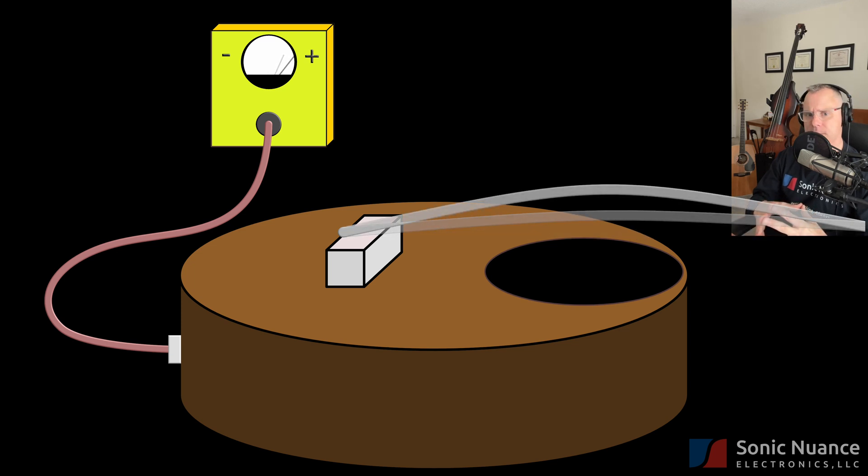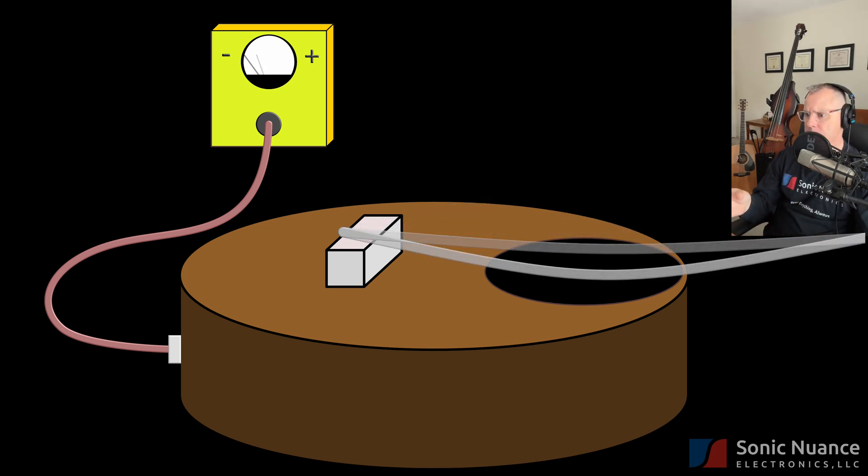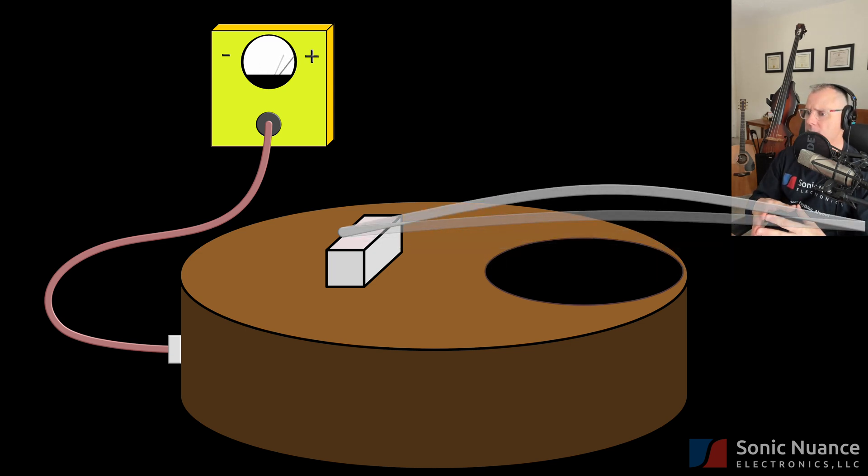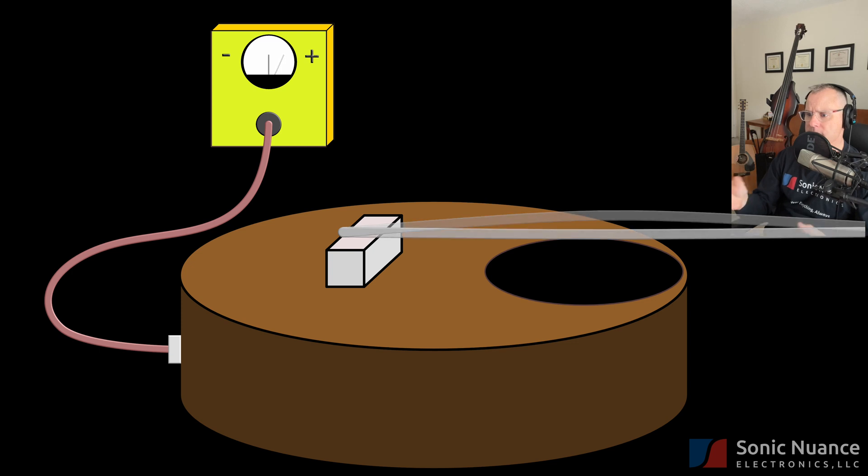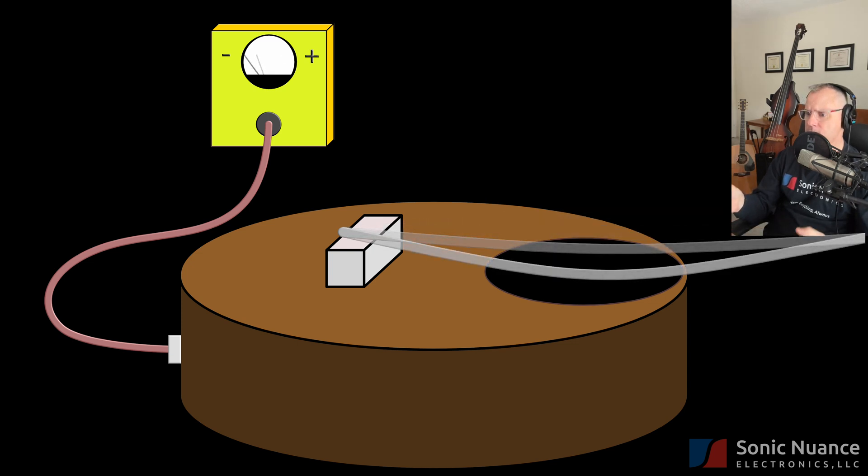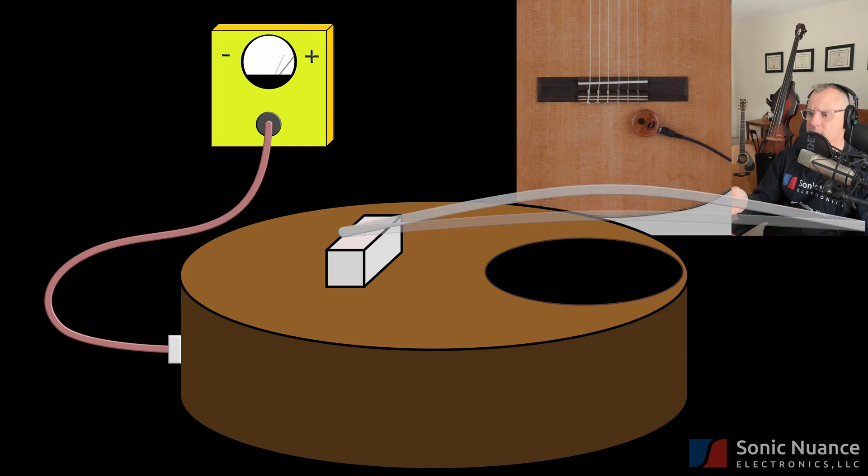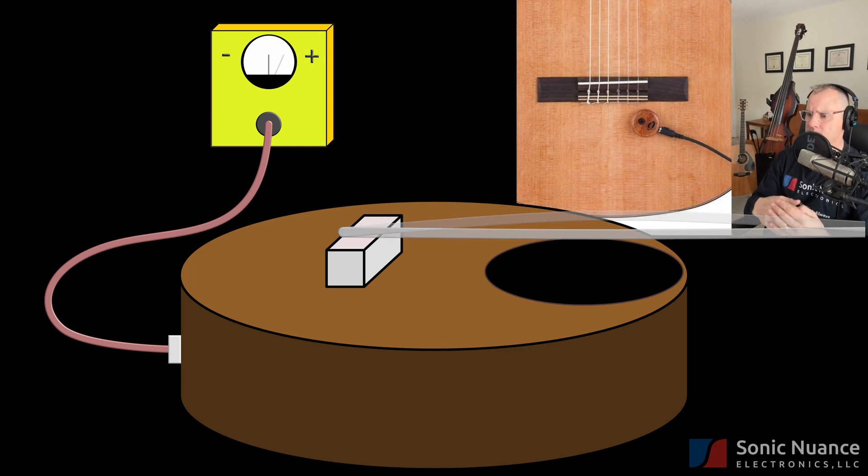Now, while we have the piezo placed under the bridge saddle, it actually can be placed anywhere on the instrument that resonates with the string. Some points are more resonant than others. Usually it's placed under the bridge saddle. Sometimes it's placed on the top, as on this picture here.